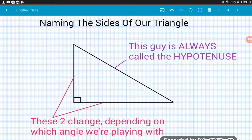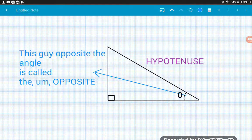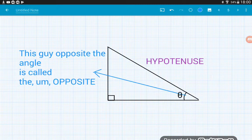The other two sides though, do change depending on which angle we are dealing with, either if it's the one at the top or the one down at the bottom right. So let's have a look at what they're called. We're going to be playing with the bottom right angle, so that's going to be our angle theta.